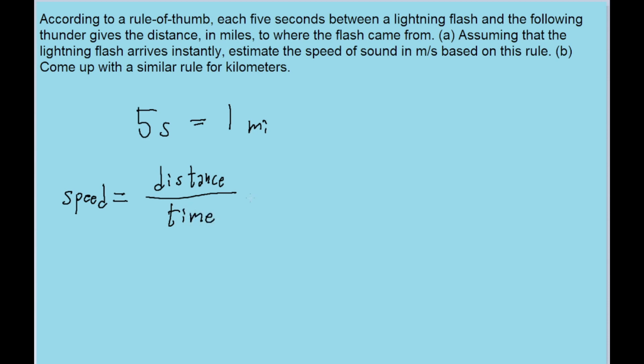In this problem, the distance is one mile and the time is five seconds. The problem asks for our estimate in meters per second, so we need to convert from miles to meters. One mile equals about 1,609 meters.